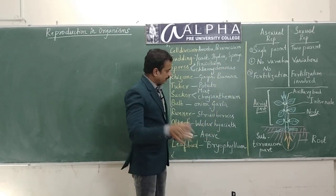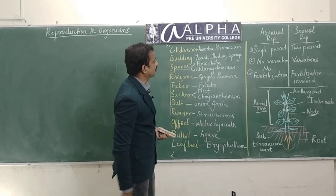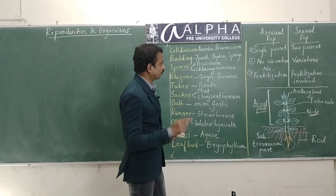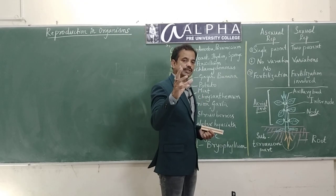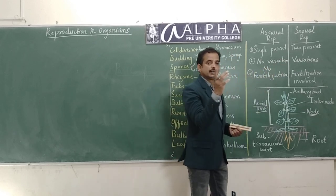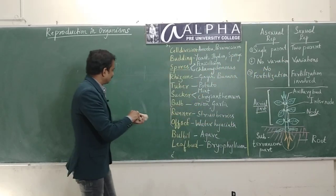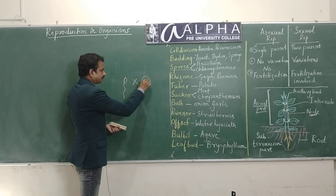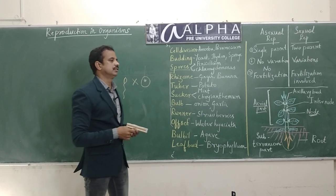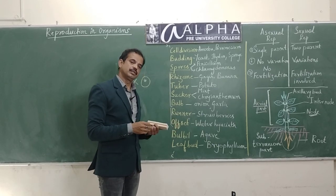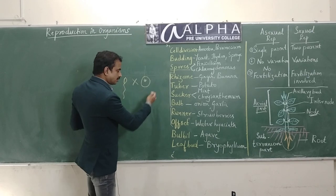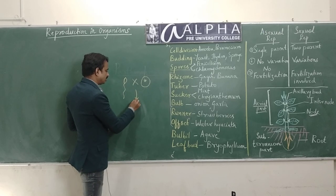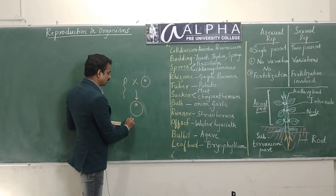This is information you require to understand Asexual Reproduction. I would also like to explain the basics of Sexual Reproduction. During Sexual Reproduction, sperm is formed and ovum is formed - male and female gametes are formed. In animals we call them sperm and ovum. These male and female gametes fuse with each other in a process we call fertilization, to produce a zygote. The zygote is the product of the fusion of sperm and ovum.